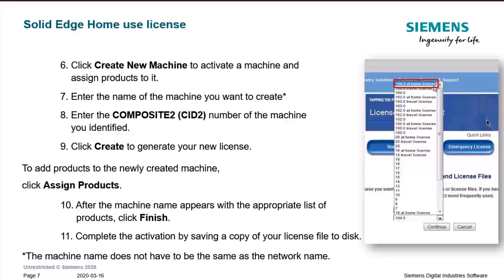You can enter the name of the machine you want to create — the name doesn't have to be the same as the network name, you can define a different name if you want. Then you need to enter the Composite CID number for that machine. We'll talk about how you obtain this information later. Then click Create to generate your new license.